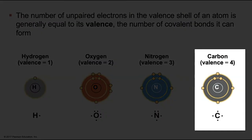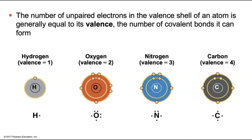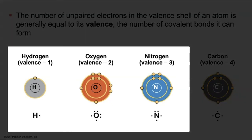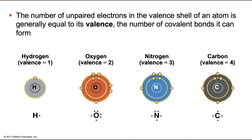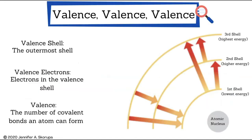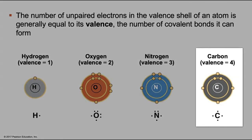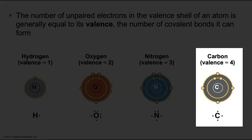Carbon has four valence electrons in its valence shell and needs four additional electrons to satisfy the octet rule. It will also serve you well to memorize the information for the other three most abundant elements in the human body: hydrogen, oxygen, and nitrogen. We have the valence shell — the outermost shell holding electrons; valence electrons — the electrons in the valence shell; and valence — defined as the number of covalent bonds an atom can form. Using carbon as an example, the valence shell is the second energy shell, there are four valence electrons, and the valence is four.